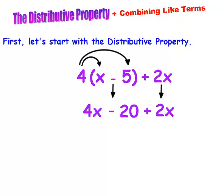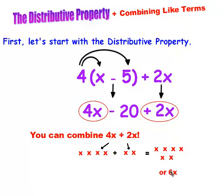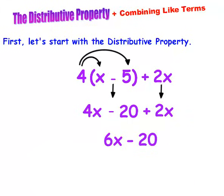Now I want you to look at this problem and you can see that you can combine 4x plus 2x. If you have 4x's and you add on 2 more x's, don't you have 6x's or 6x? That's what you do to combine like terms. So the answer is 6x minus 20.